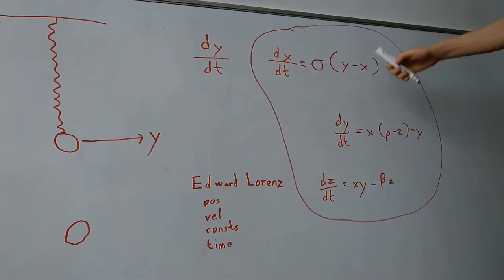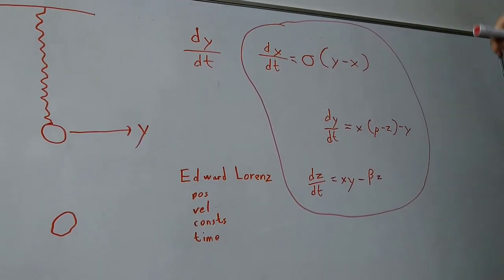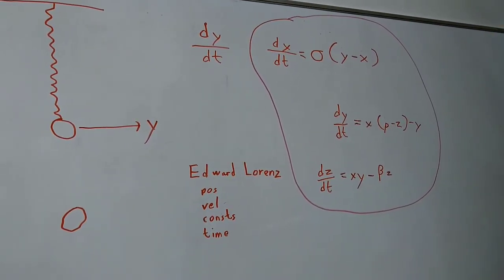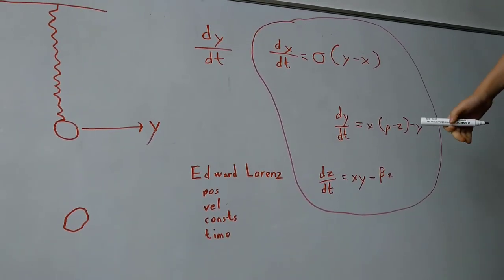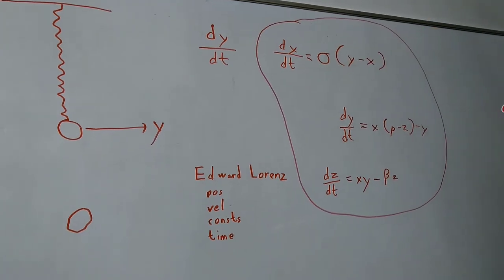And if you see x, y, and z, I really mean here pos dot x, pos dot y, pos dot z. And time? Time, that's the dt.